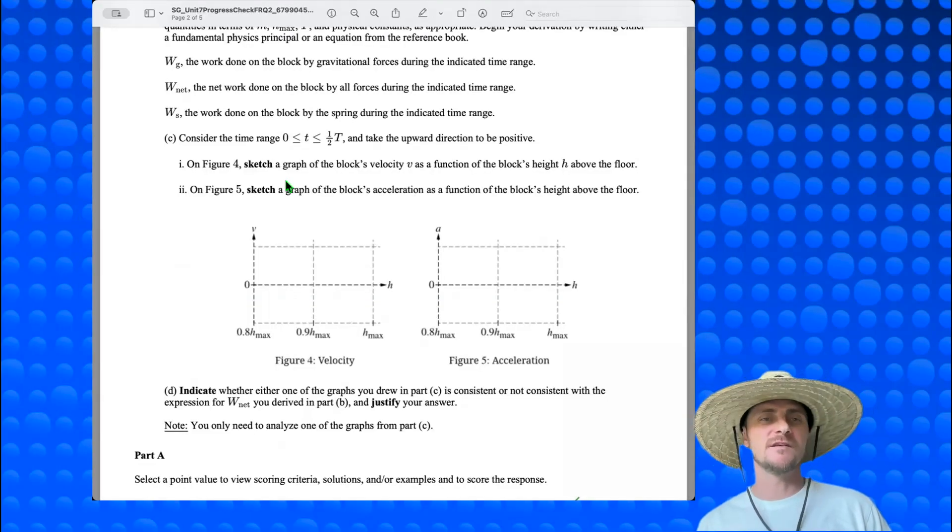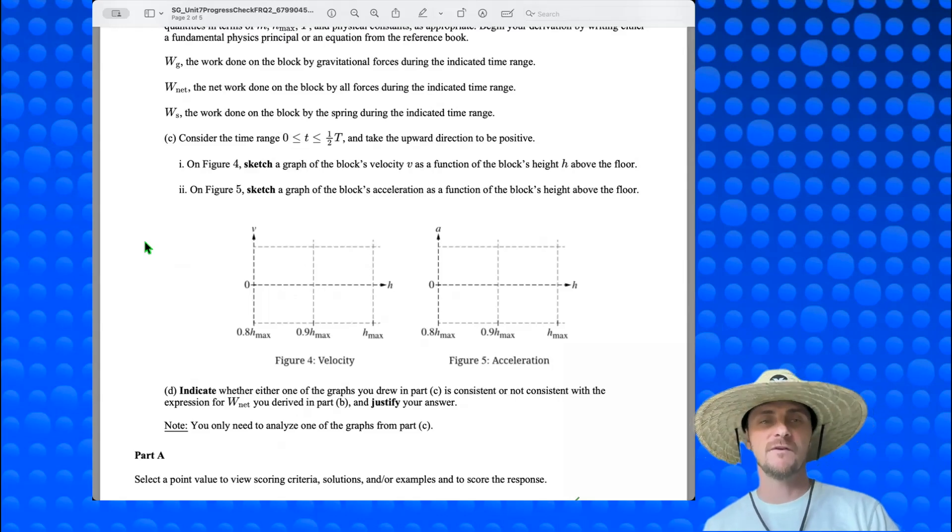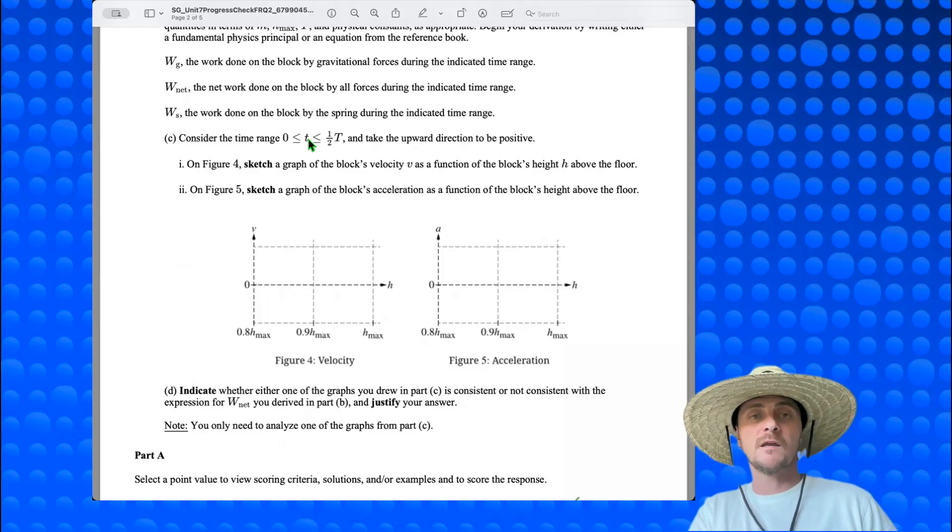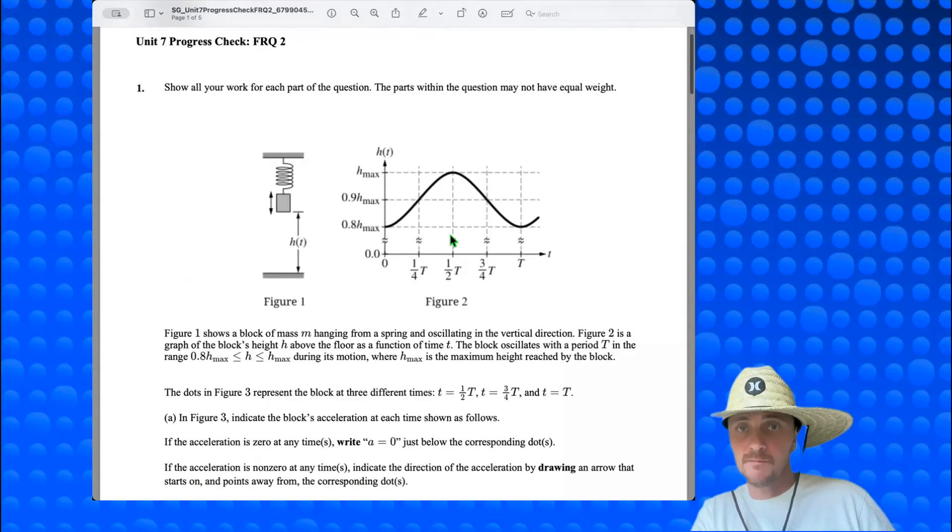Okay, let's move on to part C. All right, consider the time range zero is less than or equal to t is less than or equal to one-half capital T, and take the upward direction to be positive. C1. On figure 4, sketch a graph of the body's velocity v as a function of the block's height h above the floor. And C2. On figure 5, sketch a graph of the block's acceleration as a function of the block's height above the floor. So the first thing to note here is we're talking about the first half of the oscillation from our picture way up here, this time period.